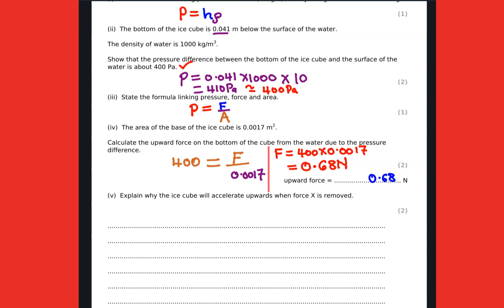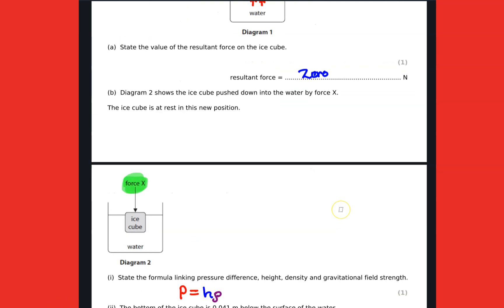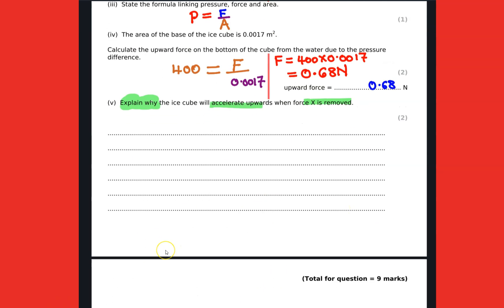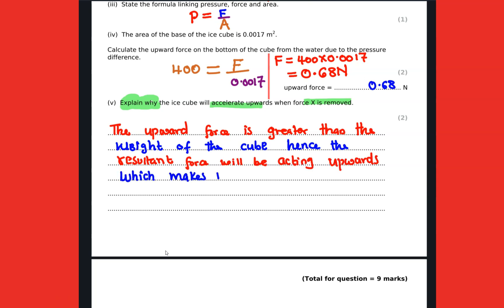Explain why the ice cube will accelerate upwards when force X is removed. When force X is removed, then the upthrust force will be greater than the weight, then the resultant forces will be acting upwards. And that's why we are supposed to state there the upward force is greater than the weight of the cube, hence the resultant force will be acting upward, hence it will accelerate upward.